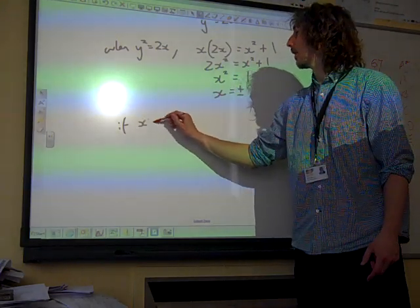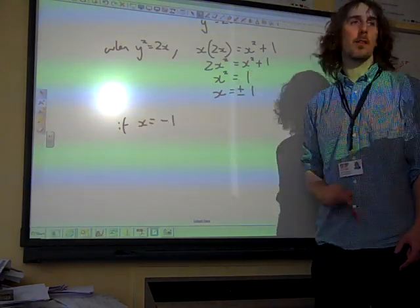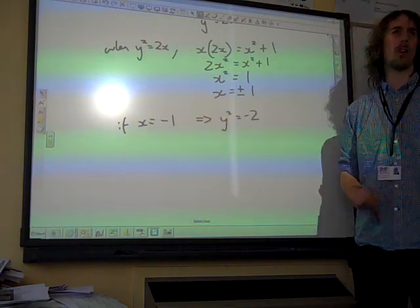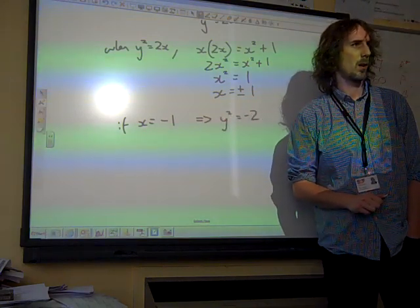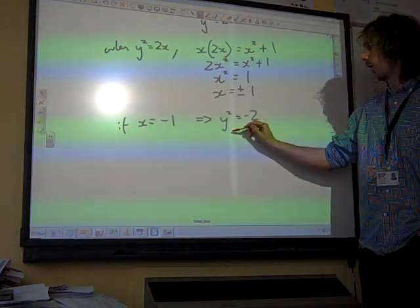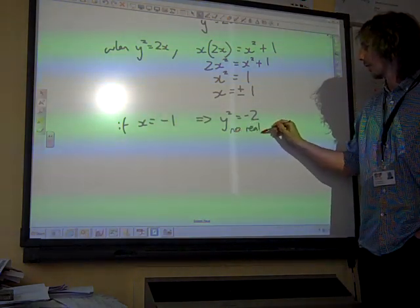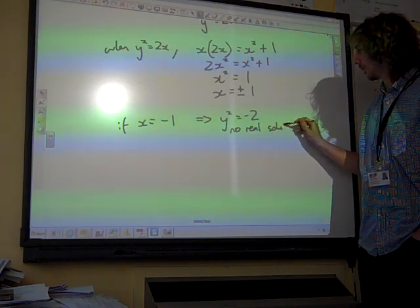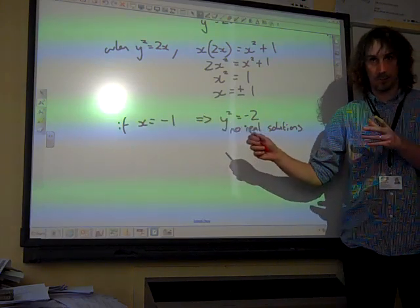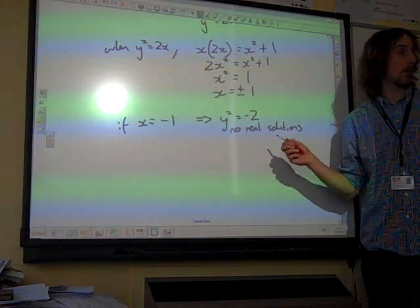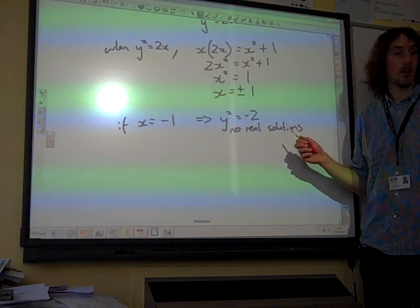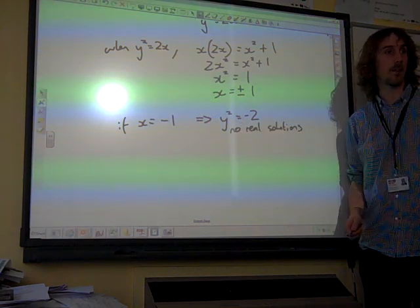If x equals minus 1, that implies that y squared is equal to minus 2. Y squared isn't going to be equal to minus 2. There are no real roots to that. So the solution that said that x was equal to minus 1 doesn't lead to any real solutions. You've just got to not do anything with it.